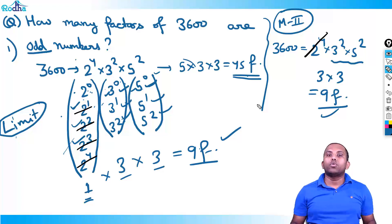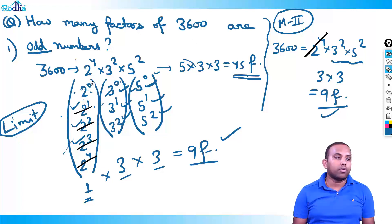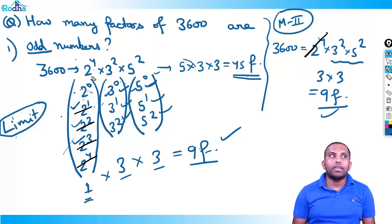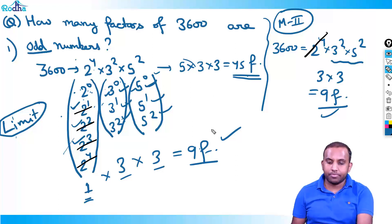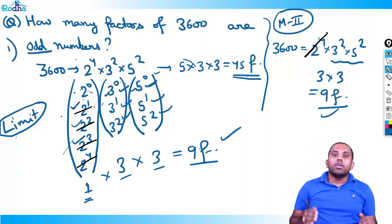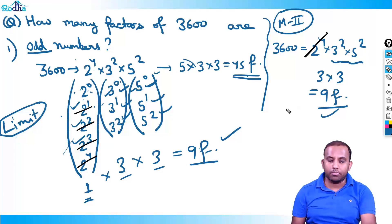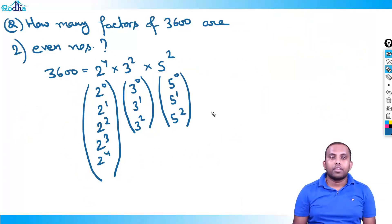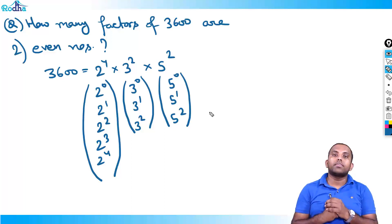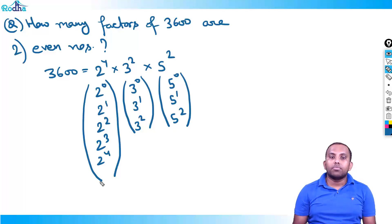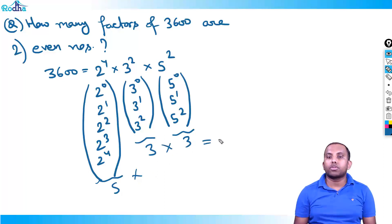Now, how many factors of 3600 are even numbers? Again, 3600 = 2⁴ × 3² × 5², giving brackets of 5, 3, and 3 terms respectively — total 45 factors. But I only want even factors. I will limit at the bracket level itself.